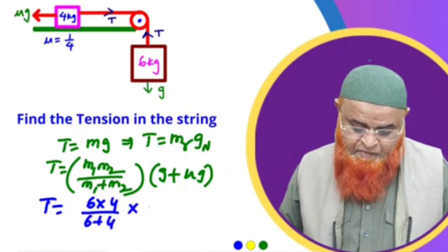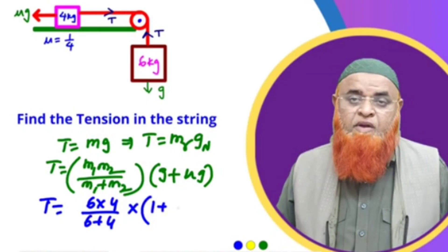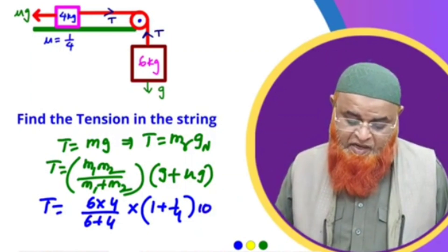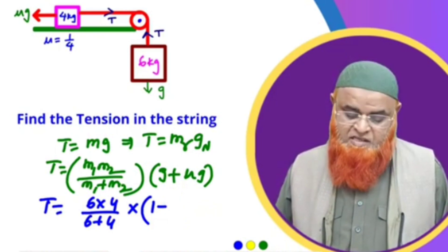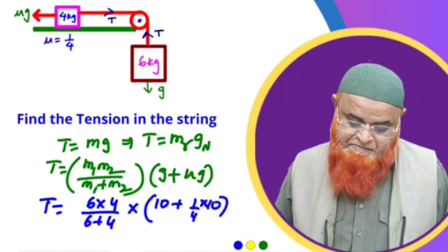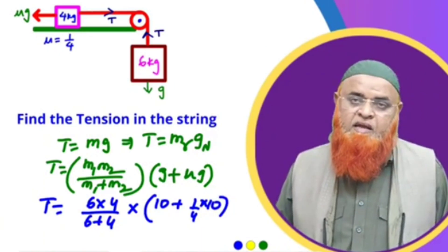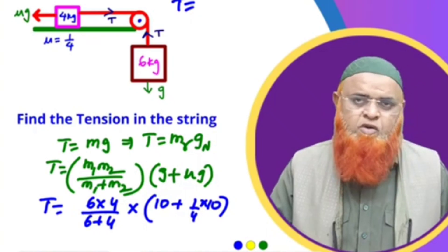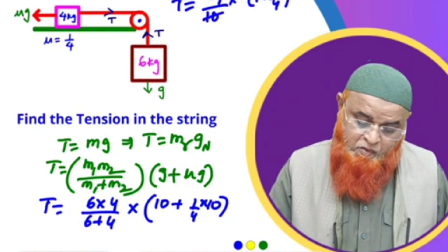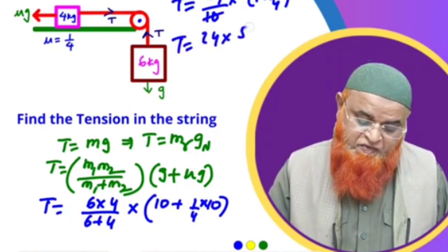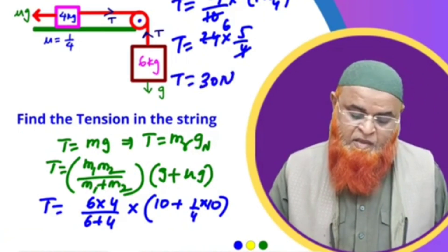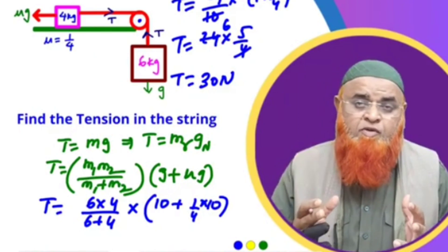Substituting: T = (6 × 4)/(6 + 4) × (1 + mu) × g = 24/10 × (1 + 1/4) × 10. Simplifying: 24 × (5/4) = 24 × 5/4 = 30 newtons. So tension T equals 30 N — solved without any free body diagram.